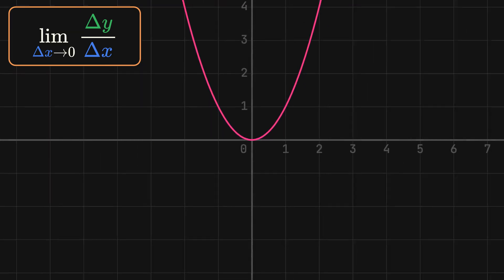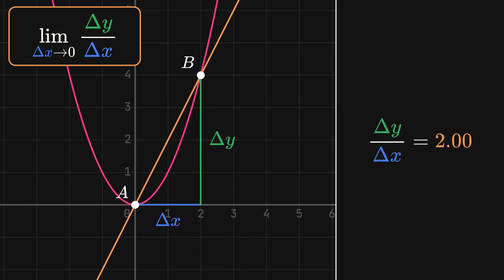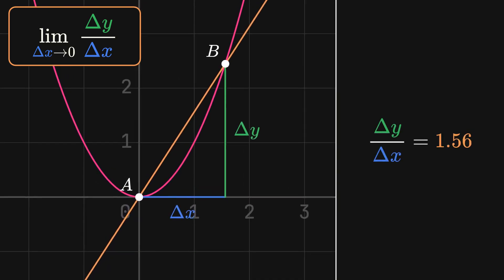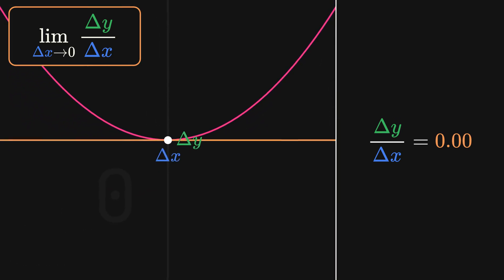Let's apply this limit definition here. The distance between the two points is as small as it could be, and now our slope is zero, as we expected earlier.